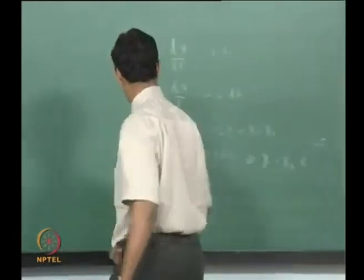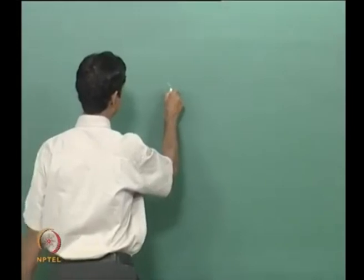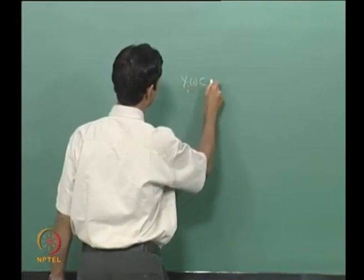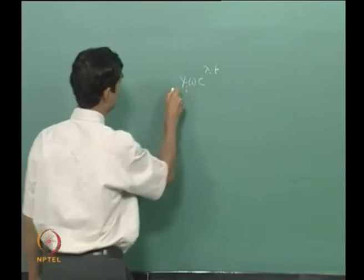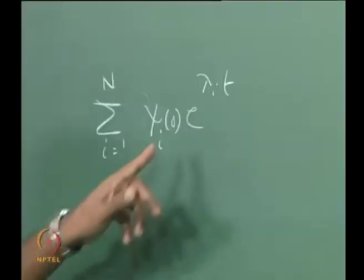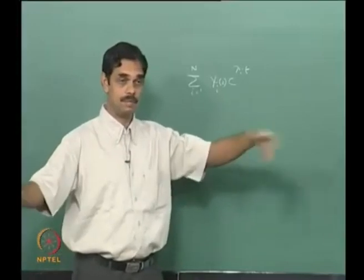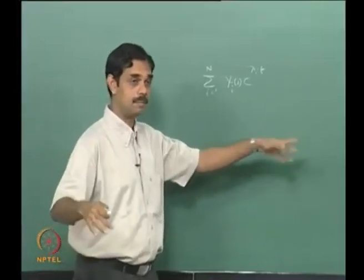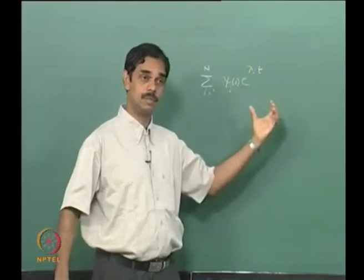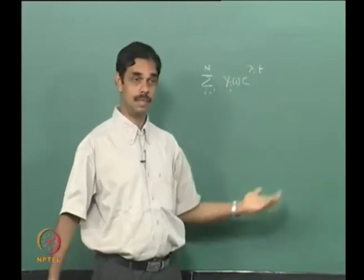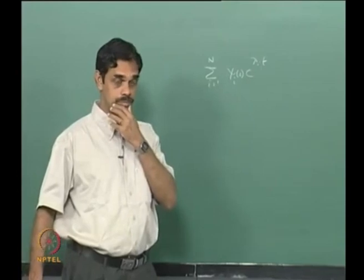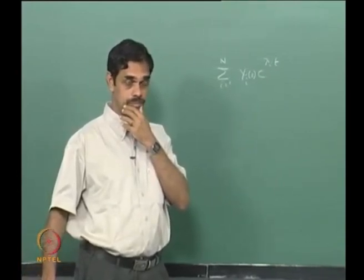Each e to the power lambda-1 t evolves one way, e to the power lambda-2 evolves another way, e to the power lambda-3 evolves another way, and how one evolves does not depend on the others. But the problem is you cannot take the energy of the modes, add them up, and get the energy of the system. When you do this you are representing the A matrix in terms of the Eigen basis.